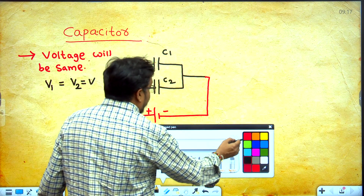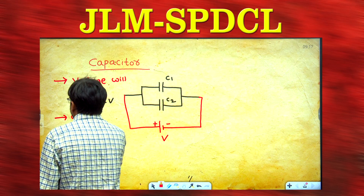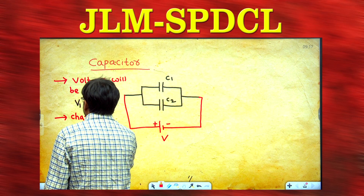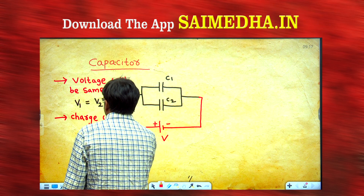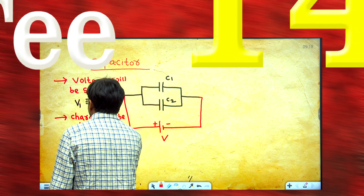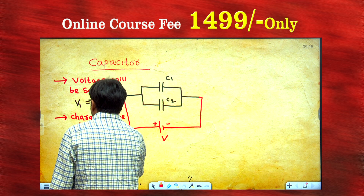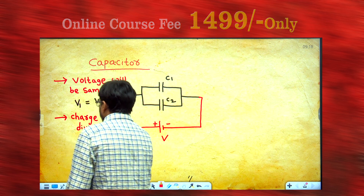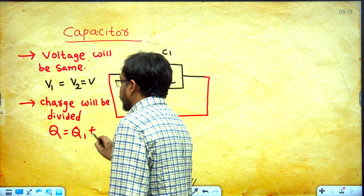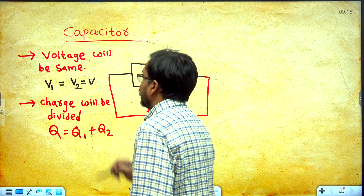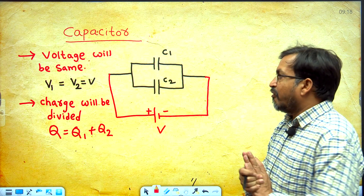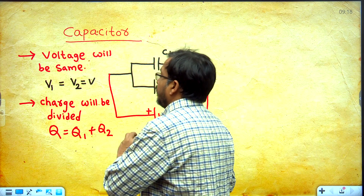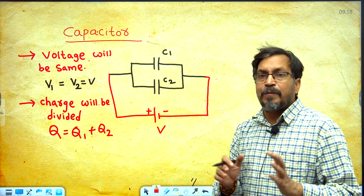So second formula: when the two capacitors are in parallel, charge will be divided. The total charge q equals q1 plus q2. When two capacitors are connected in parallel, the first concept is voltage will be same, the second concept is charge will be divided.